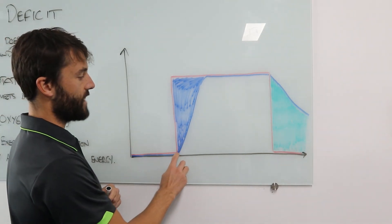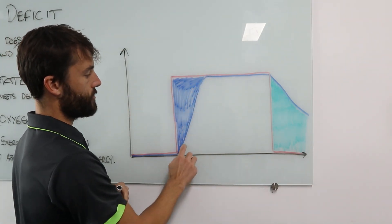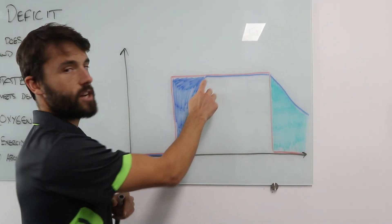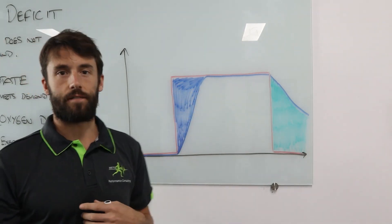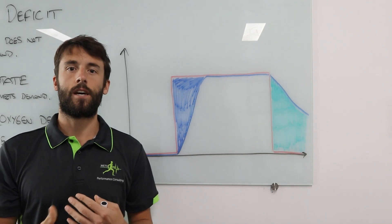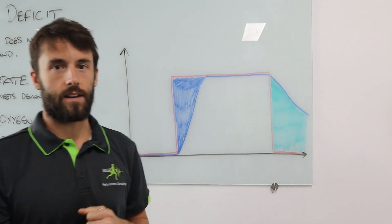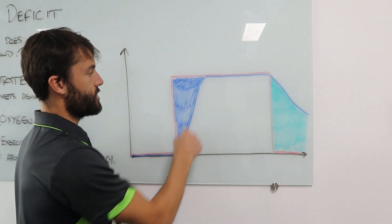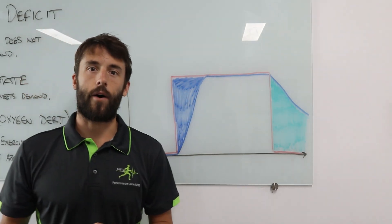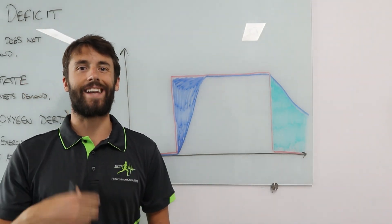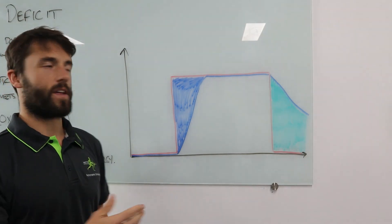As you can see, it's taken a period of time for that oxygen supply line to catch up to the oxygen demand line. So for this first period, that is our oxygen deficit — the supply isn't meeting the demand. During this oxygen deficit, we're going to see increased contributions from our anaerobic systems to help us meet the energy demand, despite the oxygen supply not being there.